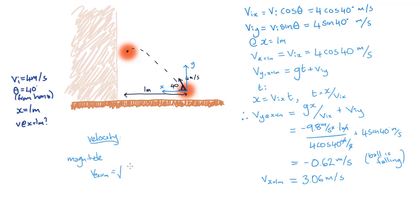Thus, the total magnitude of the velocity when the ball hits the wall is the square root of the vertical velocity squared plus the horizontal velocity squared. And this comes out to 3.12 meters per second.